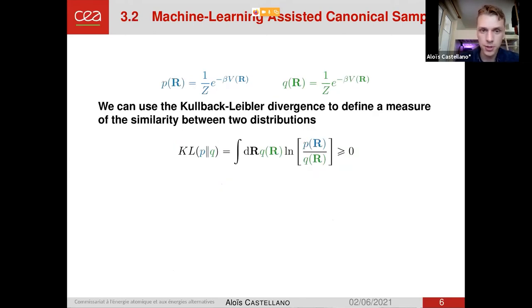To answer this question, we will start by writing the distribution of the DFT as p and the distribution of the machine learning potential as q. And we will use the mathematical tool which is called the Kullback-Leibler divergence. This quantity can be seen as a measure of the similarity between two distributions. It's always positive, and the smaller this quantity, the closer the two distributions are. So much so that if this quantity is zero, it means that the two distributions are identical. So what we will want to do is minimize this quantity.